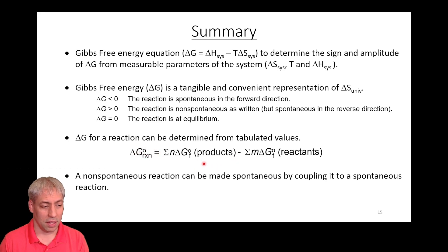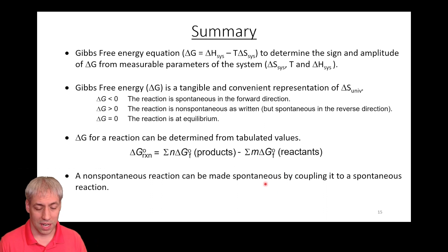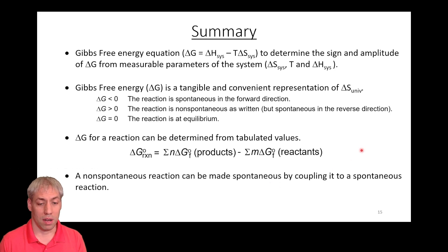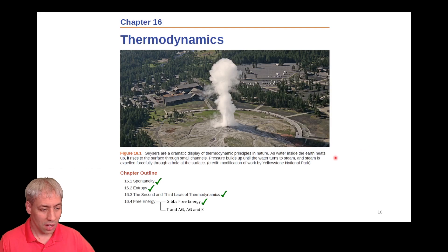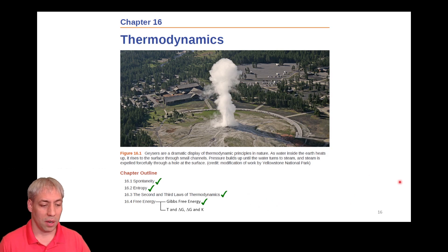We can get delta G of reaction from tabulated values: products minus reactants. If negative, spontaneous; if positive, non-spontaneous. We can also take non-spontaneous reactions and make them spontaneous by coupling them to spontaneous ones — if the overall delta G is negative, the overall process is spontaneous. That's called a coupled reaction. Next, we'll get into how temperature affects the delta G relationship and how equilibrium relates to delta G.